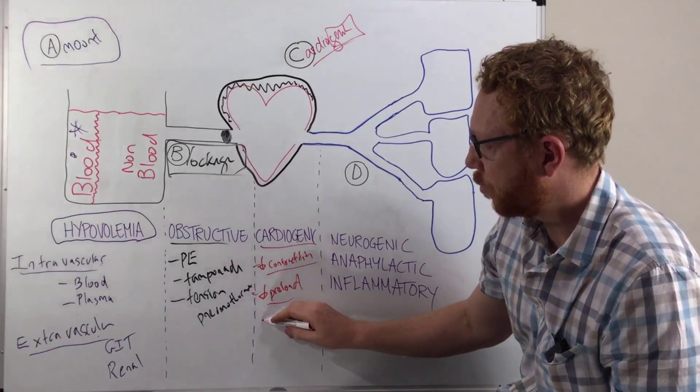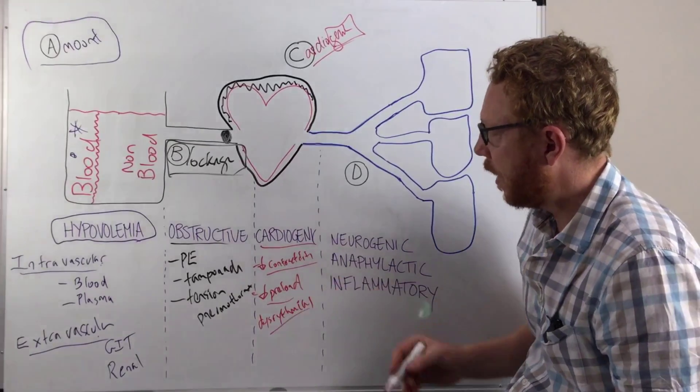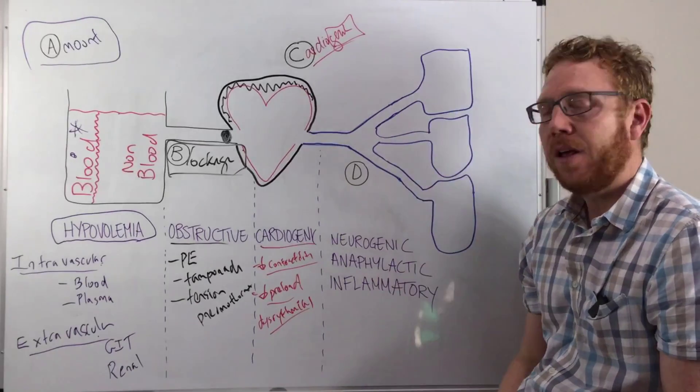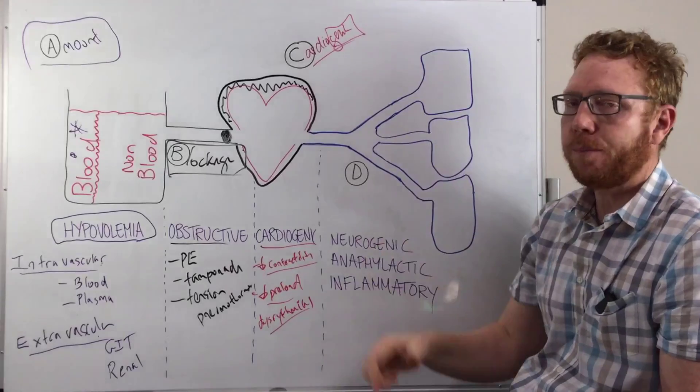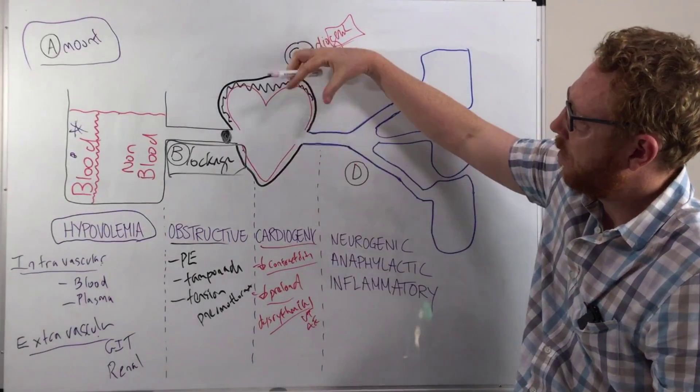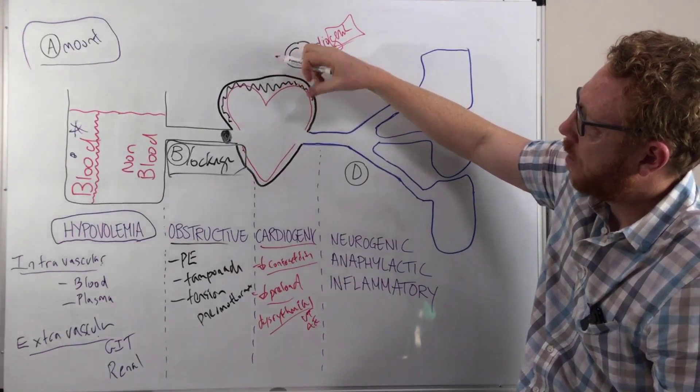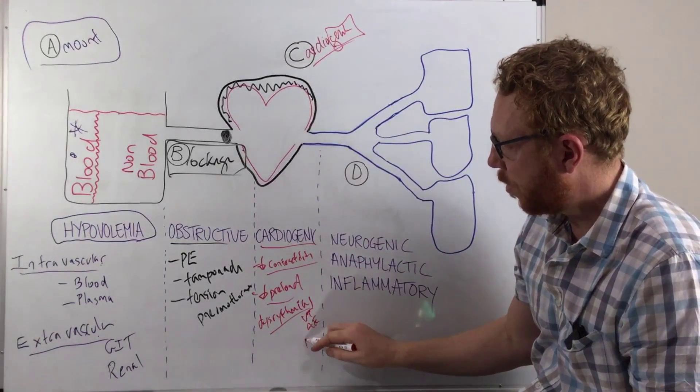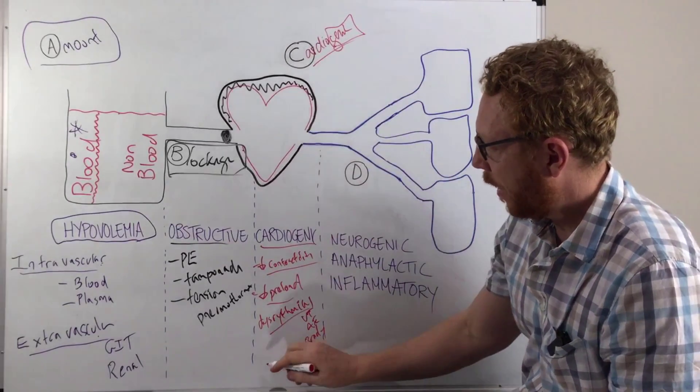Another one would be dysrhythmias. So this would be the rhythm of the heart's so poor that you're not getting output. Examples would be VT. So the heart's so quick, it's not filling. Therefore, there's no output. So VT would be an example. AF, where the atria is not really doing much. It's just kind of like a jelly and there's no blood going down at the ventricles. Therefore, no output. Or just some bradycardias where the heart is so slow, you're getting no output.